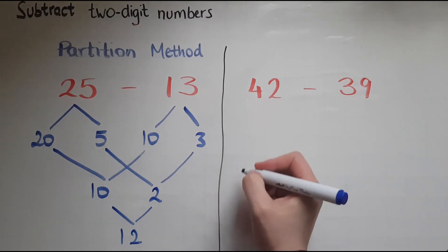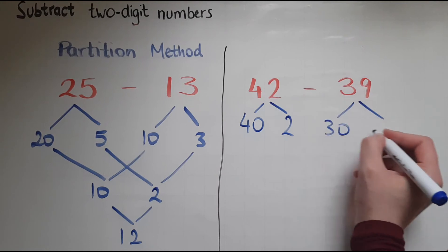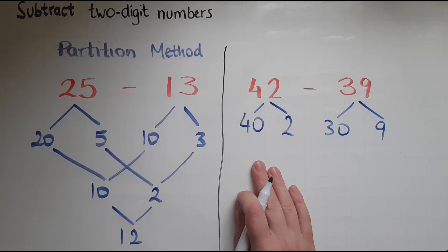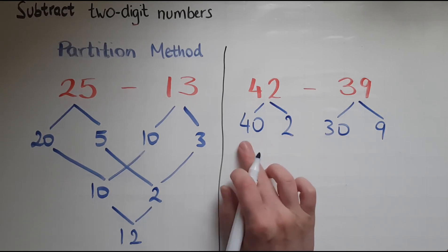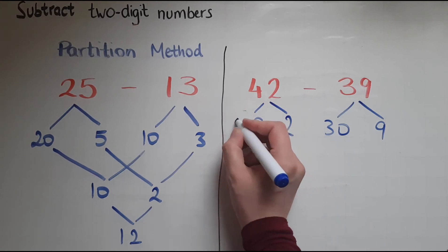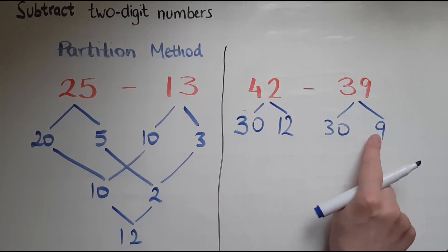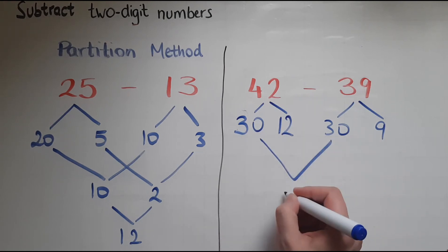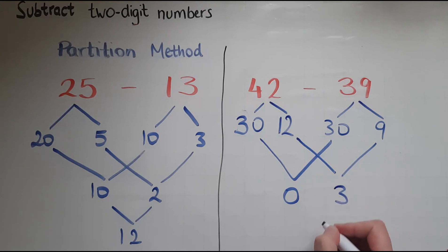Now I've got 42 which I'll split into 40 and two, 39 into 30 and nine. Now if I take away 30 from the 40 that leaves me with 10 but I can't take away nine from the two. So I'm going to have to change this slightly. So I make this into 30 and 12. It still makes 42 because then it's going to be easy to take away nine from the 12. So 30 take away 30 leaves me with zero. 12 take away nine leaves me with three. So my answer is three. So this is how you use the partition method for subtracting numbers.